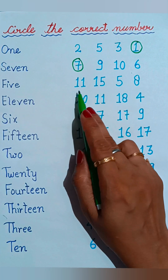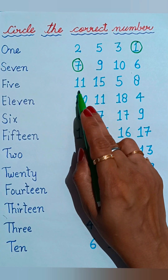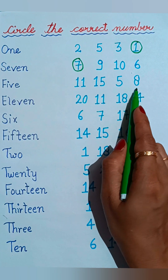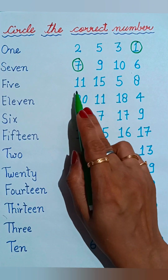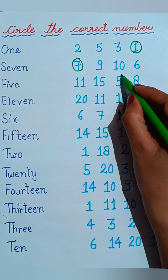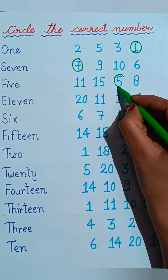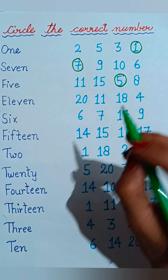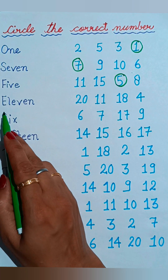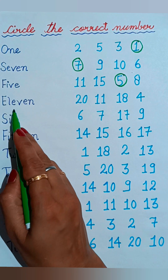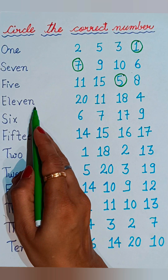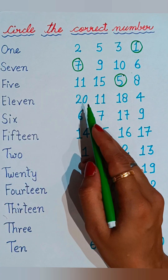See the next one: F-I-V-E, five. Now see where five is given. Seven, eleven, fifteen, five, and eight — here at the third number five is given, so we will circle the number five.